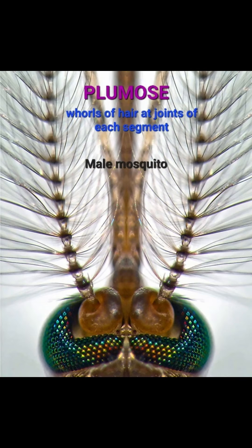Next type is plumose type of antenna. For this, an example is male mosquito. In this type, a whorl of hair arises from the joint of each segment which looks like a plume.